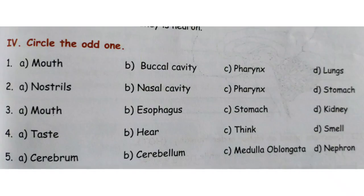Number 4: A: taste, B: hear, C: think, D: smell. Taste (mouth), hear (ear), and smell (nose) are 5 external senses. Think uses the brain, which is an internal organ. So the fourth question answer is Option C: think.